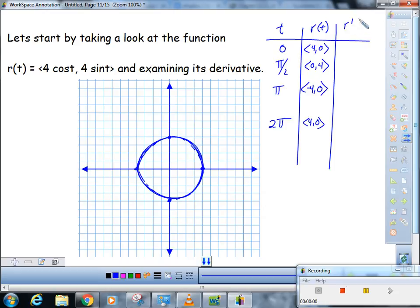r prime of t is going to be equal to, let me give myself a little room. So the derivative of cosine is minus sine, so this will be negative 4 sine of t. The derivative of sine is cosine, so 4 cosine of t.